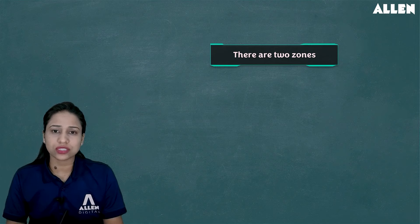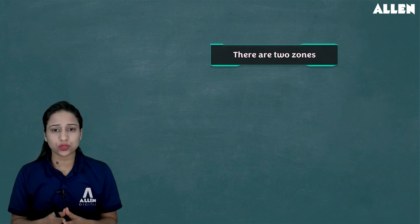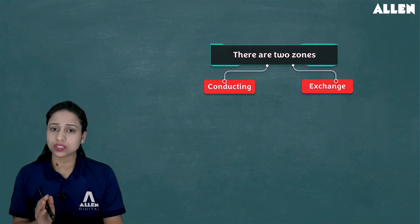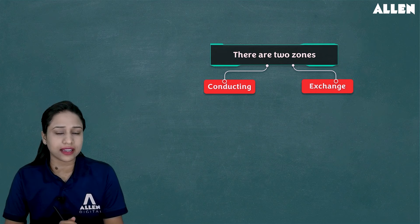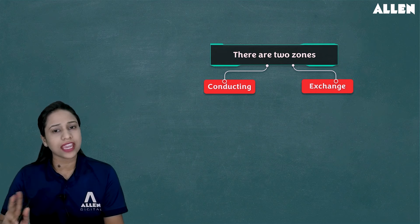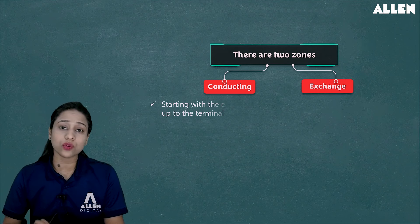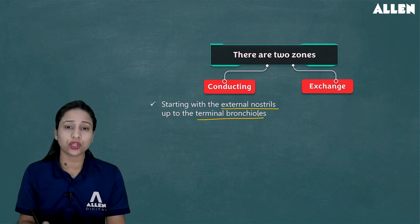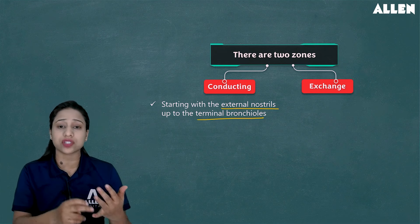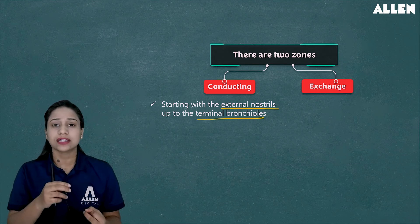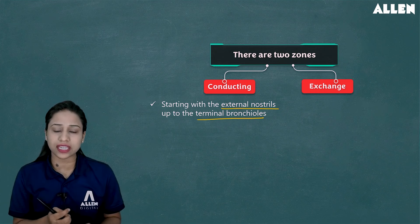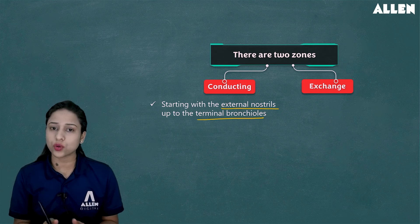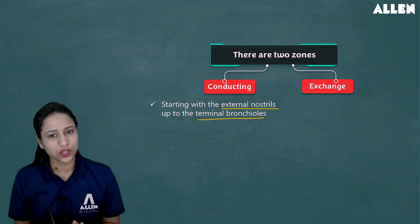The human respiratory system is divided into two main zones: the conducting zone and the exchange zone. The conducting zone extends from the external nostril to the terminal bronchioles, comprising the external nostril, nasal chamber, internal nostril, pharynx, larynx, trachea, primary bronchi, secondary bronchi, tertiary bronchi, and terminal bronchioles.